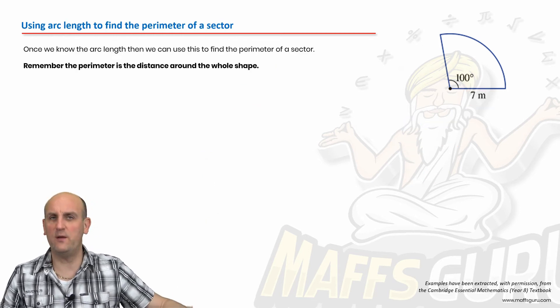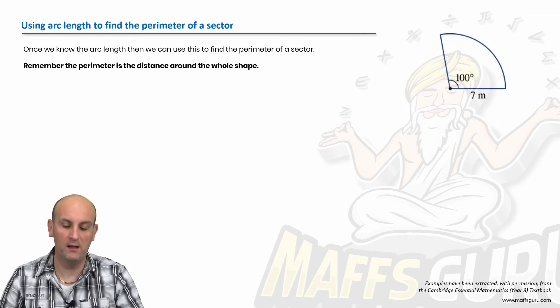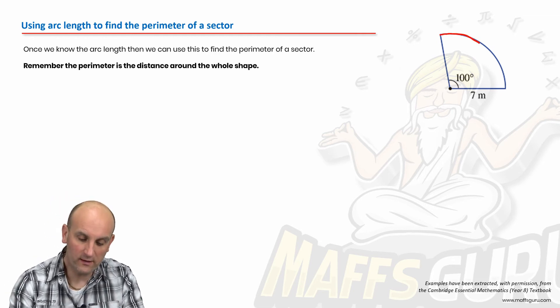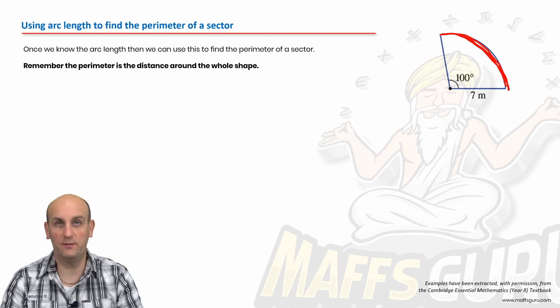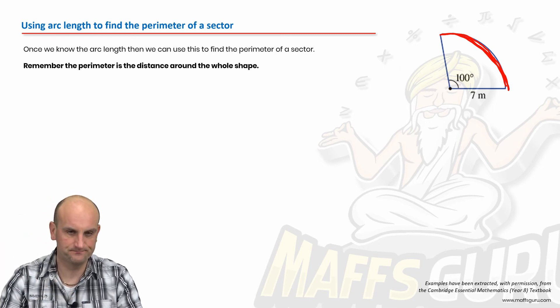Once we know the arc length, then we can find the perimeter of this shape. And so now remember, in the previous question, all we found was this section here. We just found that section there. That is not the perimeter. The perimeter is start at a point and walk all the way around the side.